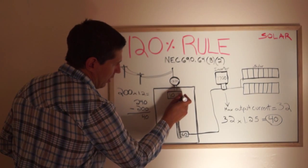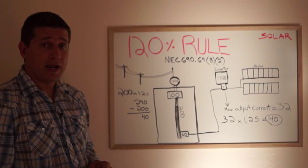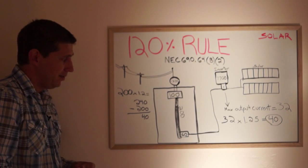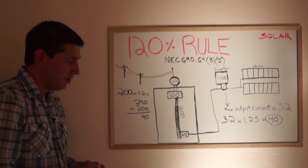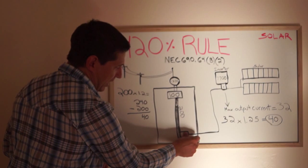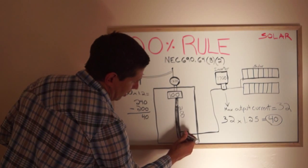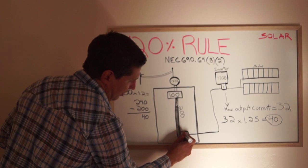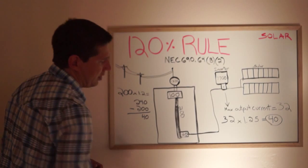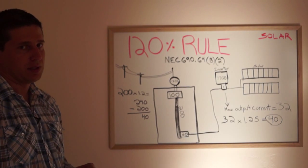100 amp main breaker. What's the biggest solar system you can produce? With overcurrent protection, the largest system we can add to this panel is a 20 amps capacity solar system.